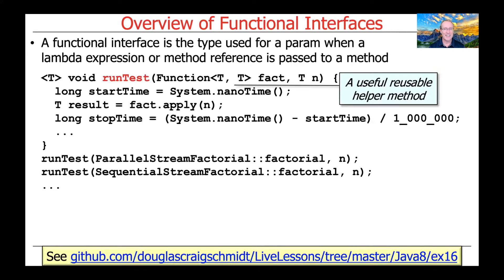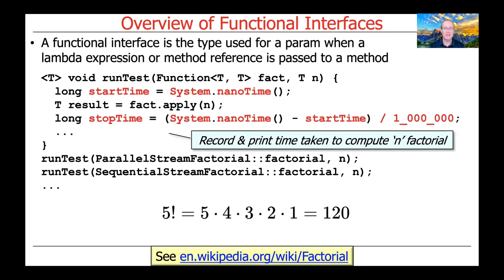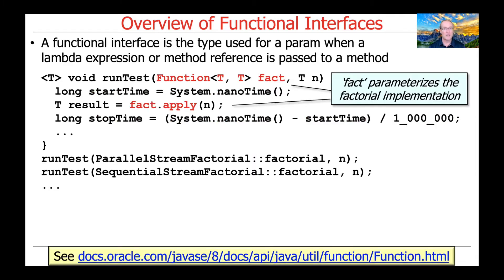Let's take a look at an example — you can find this at the link at the bottom of the slide, which is part of my GitHub repository. We have a method called runTest, which is a useful, reusable helper method. Its purpose is to record and print the time taken to compute the nth factorial. The fact parameter passed to runTest is actually a Function functional interface, used to parameterize the factorial implementation. After recording the initial system time, we call fact.apply — the one method defined in Function — to run the factorial computation, enabling behavior parameterization.